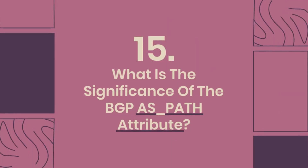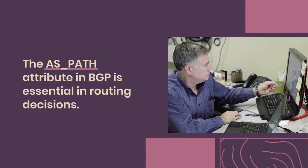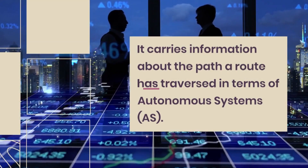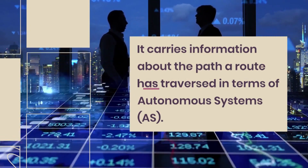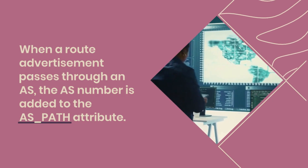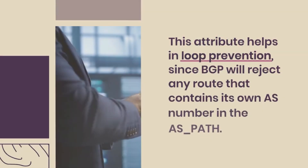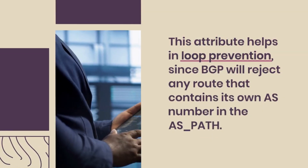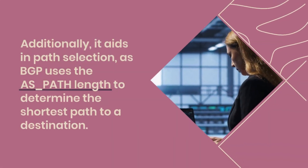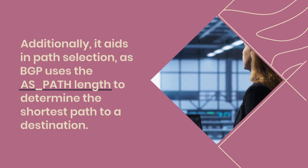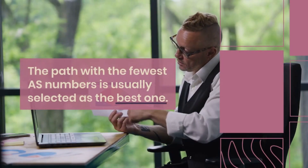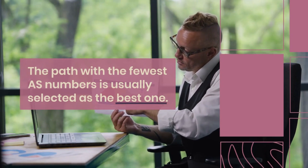What is the significance of the BGP AS_path attribute? The AS_path attribute in BGP carries information about the path a route has traversed in terms of autonomous systems. When a route advertisement passes through an AS, that AS number is added to the AS_path attribute. This attribute helps in loop prevention, since BGP rejects any route containing its own AS number in the AS_path. It also aids in path selection, as BGP uses the AS_path length to determine the shortest path — the path with the fewest AS numbers is usually selected as best.